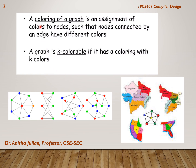Coloring of a graph is an assignment of colors to nodes such that nodes connected by an edge have different colors. In our school days we would have done geography coloring of a country's map. We try to color in such a way that no two adjacent states have the same color, so we are able to distinguish one state from another. This problem is called coloring of a graph.